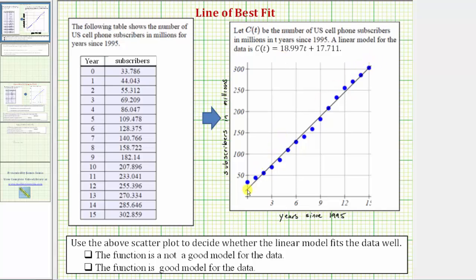Notice how the linear model fits the data well because all the points on the scatter plot are very close to the black line. Therefore, the linear model could be used to make predictions about the number of subscribers in a certain year.